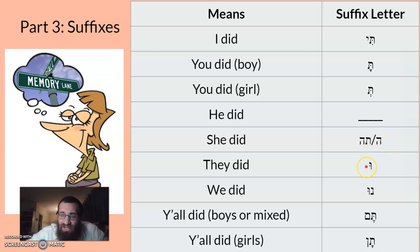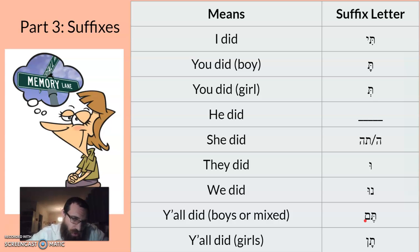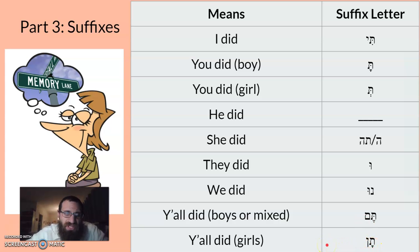A vav at the end means 'they did.' A nun at the end means 'we did.' Tav-mem at the end means 'you all' — boys and girls mixed. Tav-nun at the end means 'you all' — just for girls.